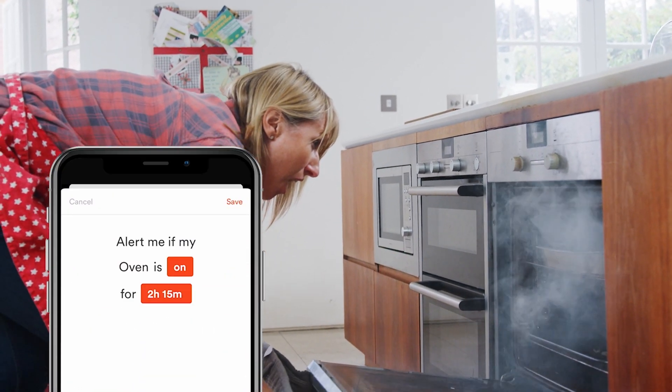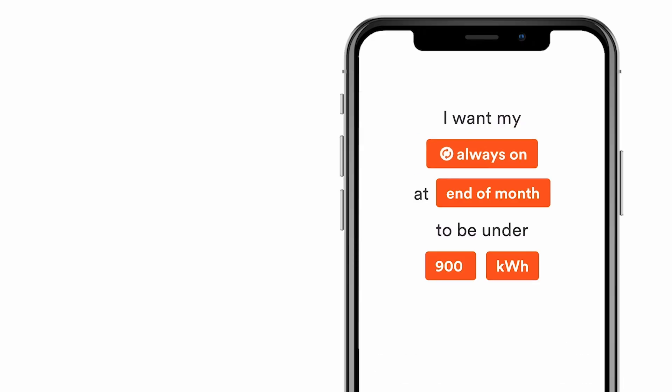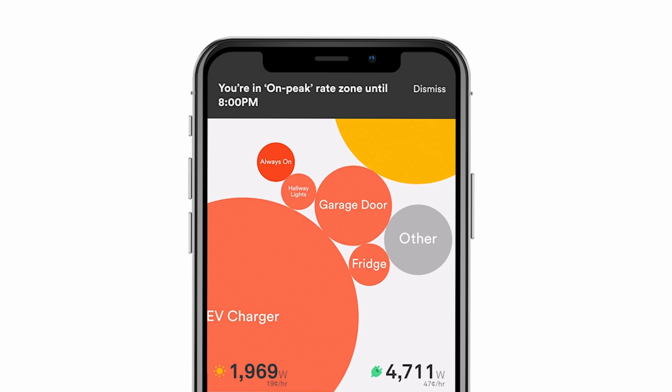Customers can also set device alerts, for example, when the oven is left on too long, create energy goals and respond to rate-based alerts.